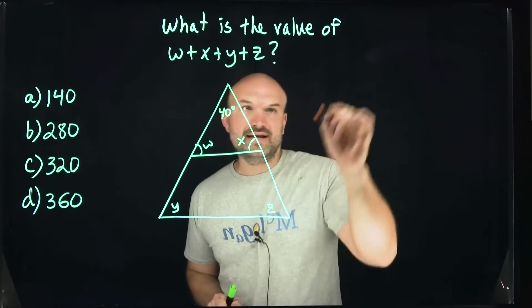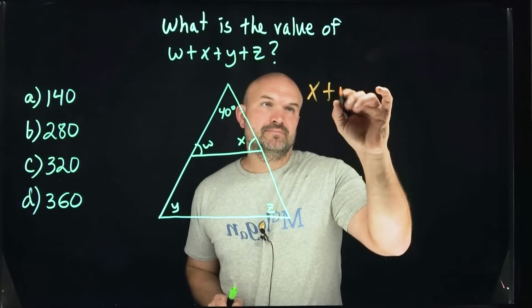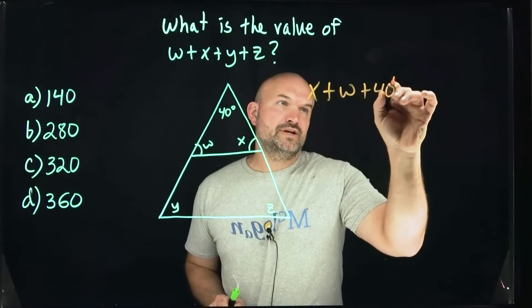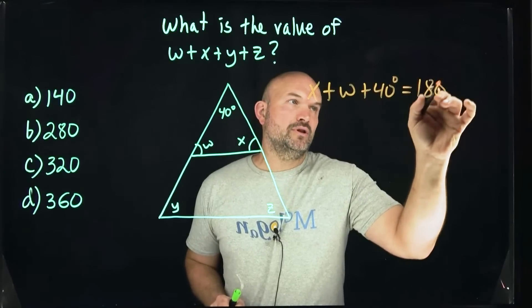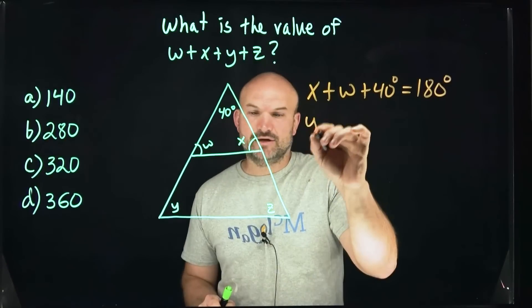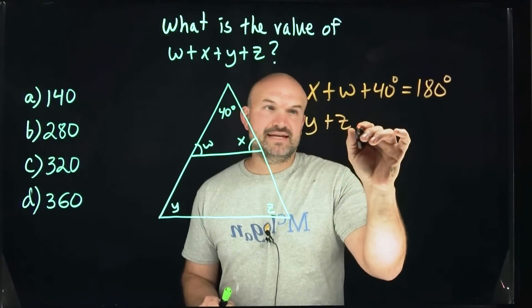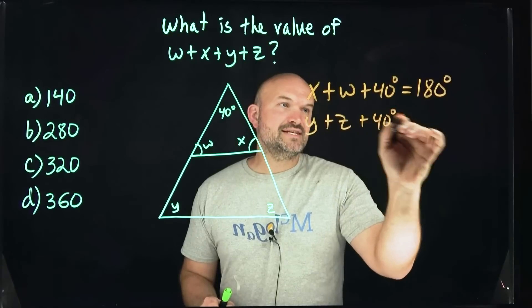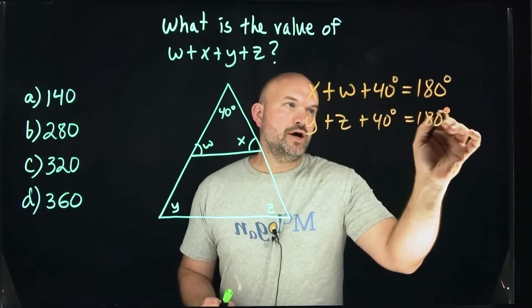So I have this smaller triangle right here, so I can write x plus w plus 40 degrees is going to equal 180 degrees. We also have this larger triangle, which is going to be angle y plus angle z plus 40 degrees is also equal to 180 degrees.